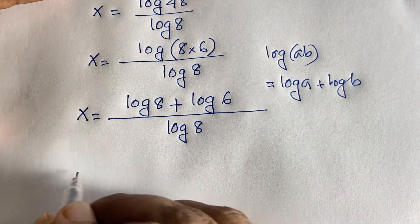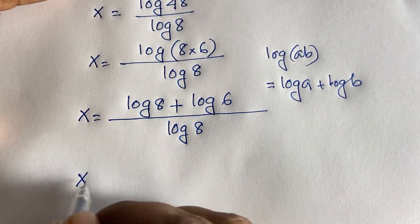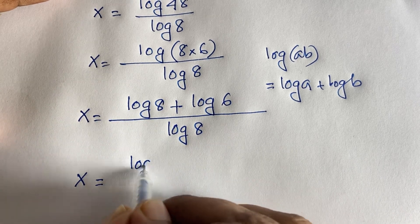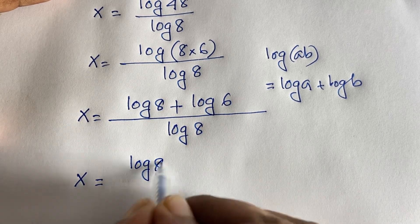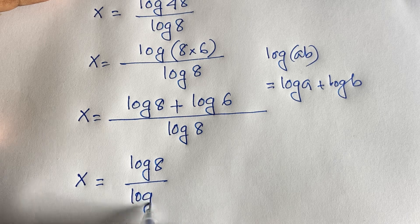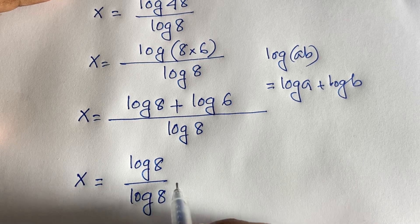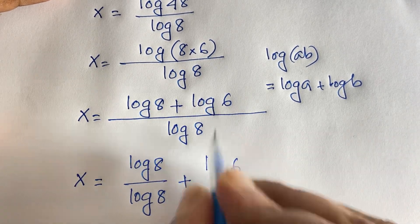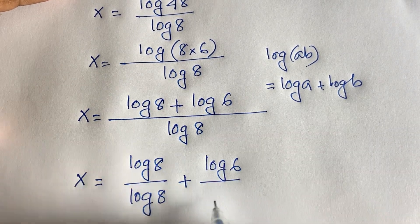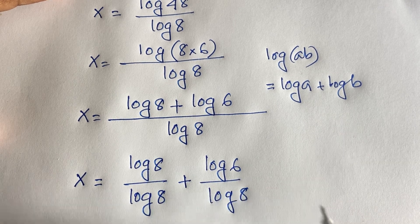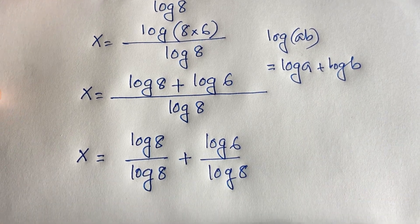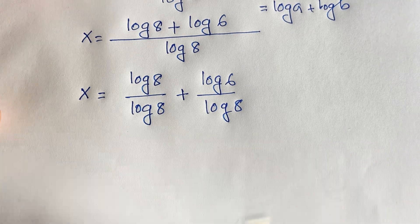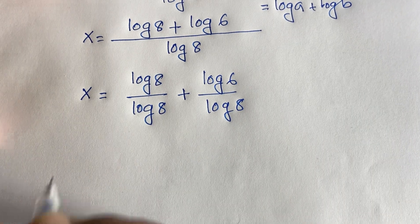Now I split this expression. x equals log 8 over log 8 plus log 6 over log 8. Since log 8 over log 8 equals 1, the equation becomes x equals 1 plus log 6 over log 8.